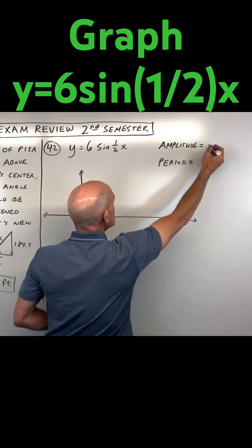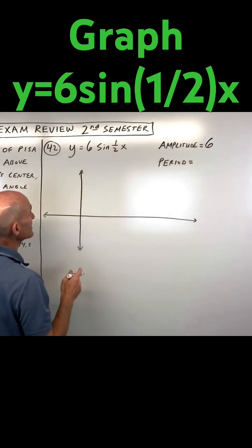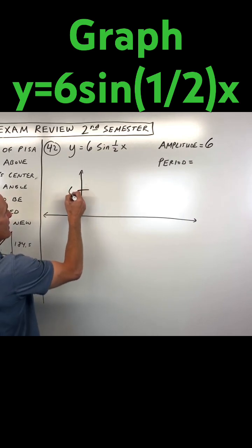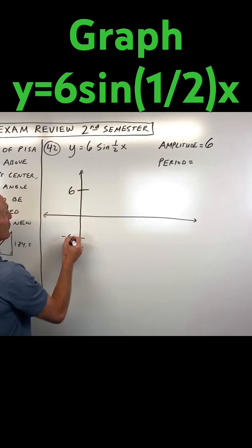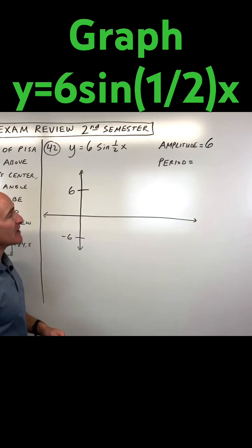If it's negative, you just take the absolute value to get the amplitude, so that's six. And now for the period, this one-half is going to have the reciprocal effect on the period when it's grouped with the x like that.